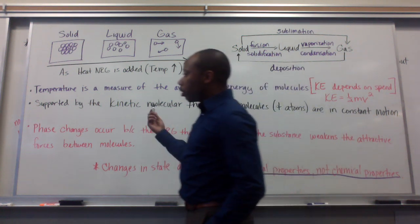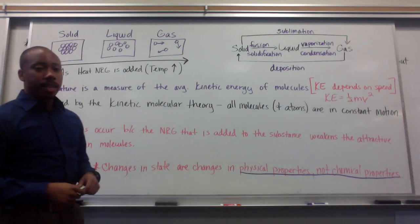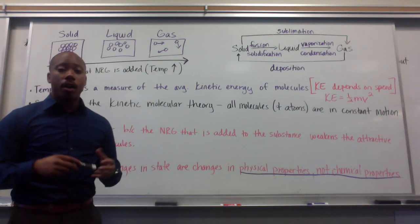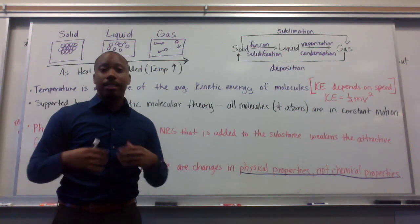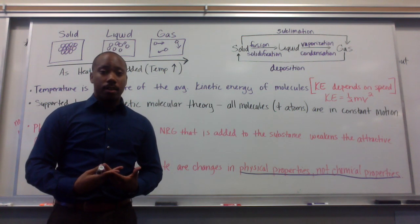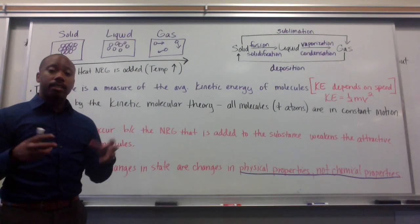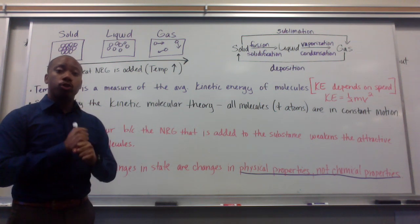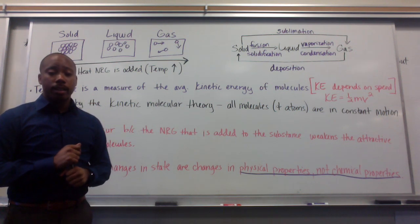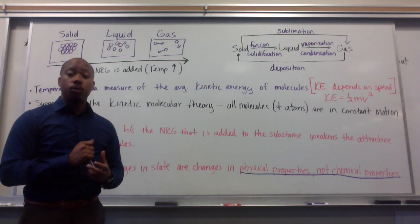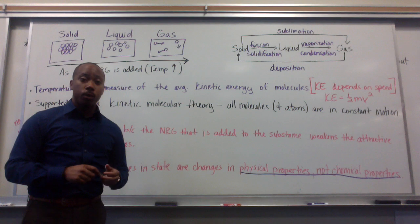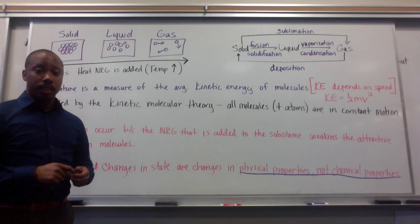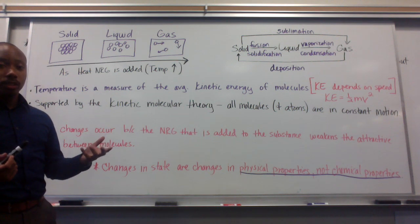This is supported by the kinetic molecular theory, which states that all molecules and atoms are in constant motion, so everything exists at some temperature. There isn't anything in the world that is just motionless. At that point we call it absolute zero, which is zero Kelvin — or negative 273 degrees Celsius — which we haven't reached yet. Some theorize that it's impossible to reach.